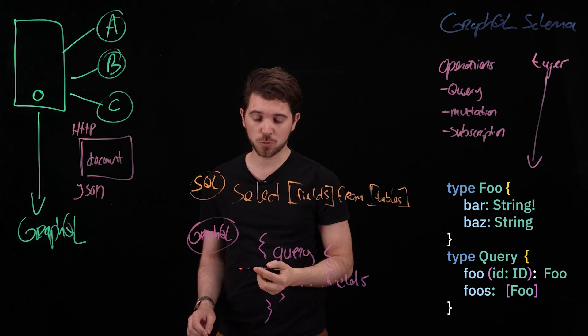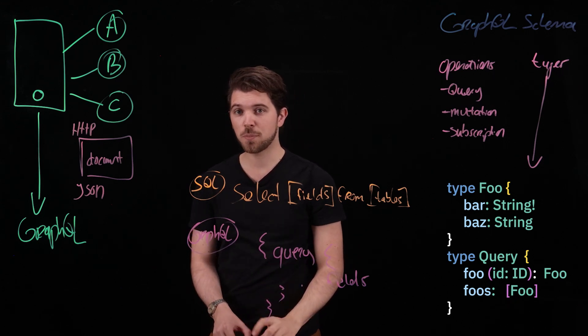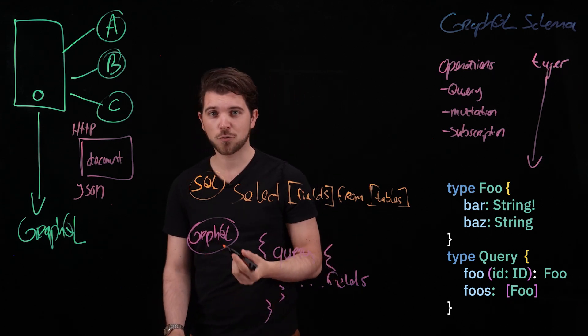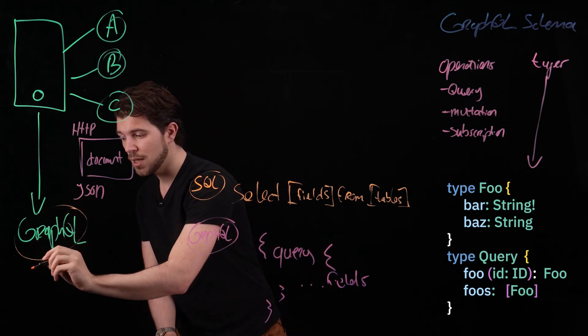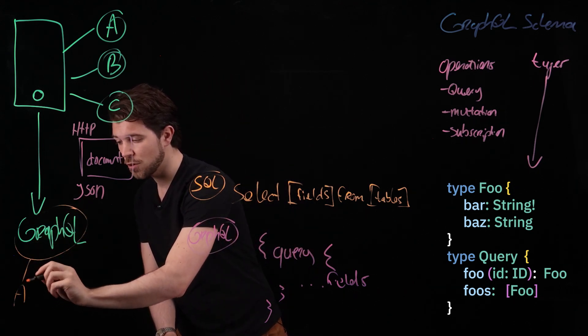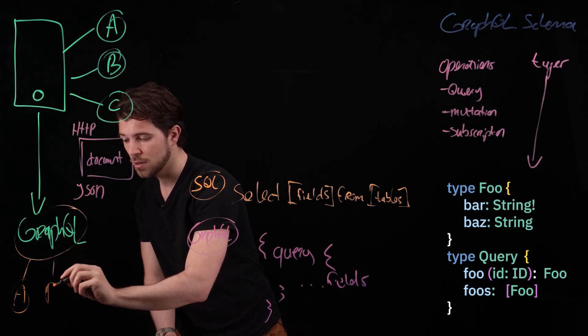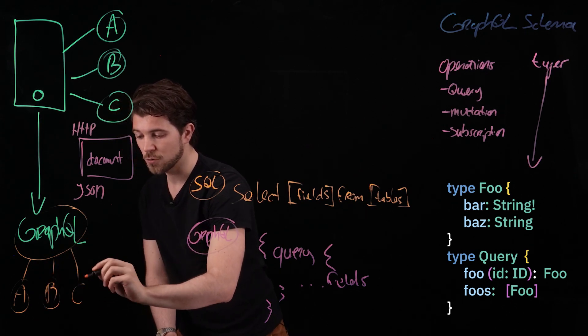In the case where you want to connect multiple data sources, the GraphQL API will make sure to collect the data from your underlying services. In this scenario, GraphQL will serve as a middleware, which we also call GraphQL Federation.